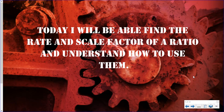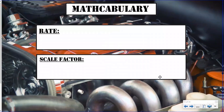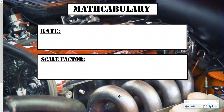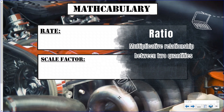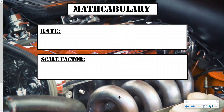Before we really dive in, let's understand some mathcabulary. If you remember from last lesson, we talked about what a ratio really was and the different ways to write them. A ratio is a multiplicative comparison between two quantities — quantities being numbers. Within a ratio there is something called a rate and a scale factor.